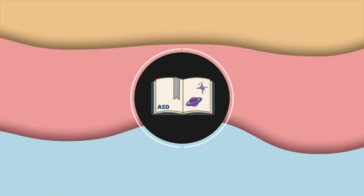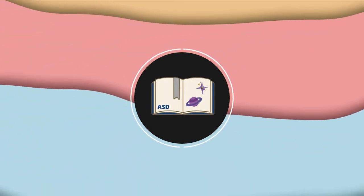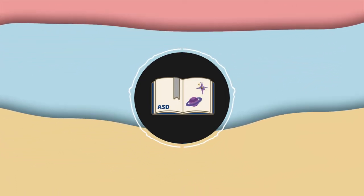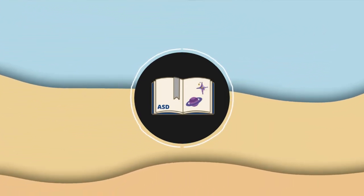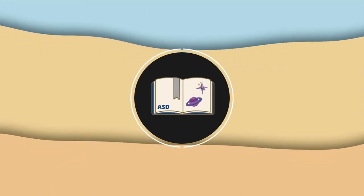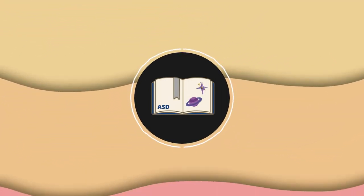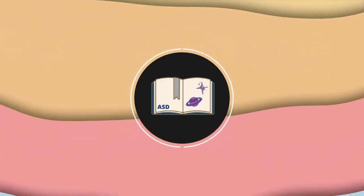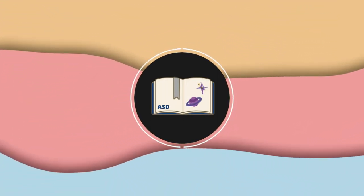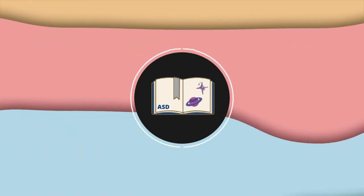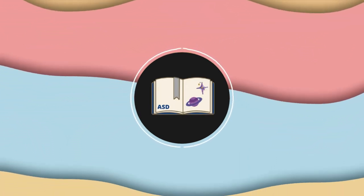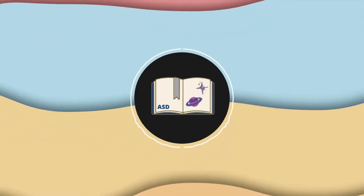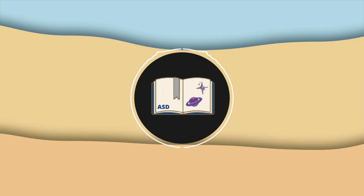And because the algae, the zooxanthellae provide food and energy to the coral, essentially those corals that are bleached lose that energy. They lose that input of food. And oftentimes that leads to the demise of the coral animal. Not always, but very often so. And so that's why bleaching is such a problem for corals around the world.